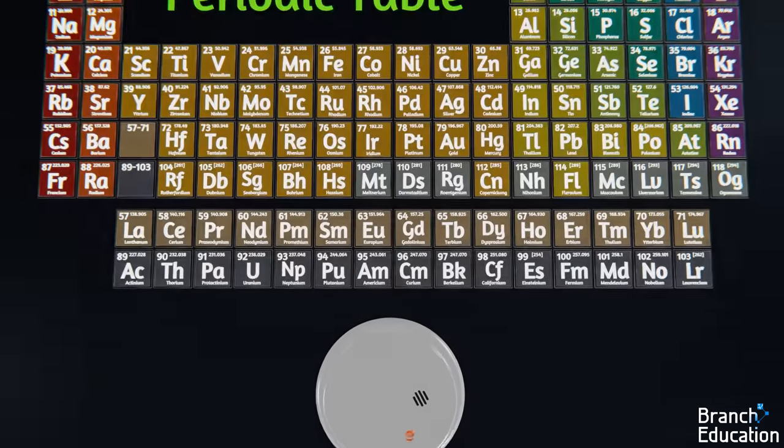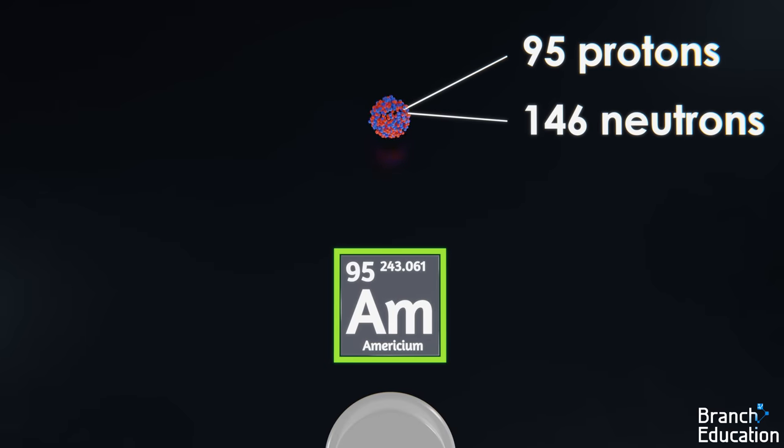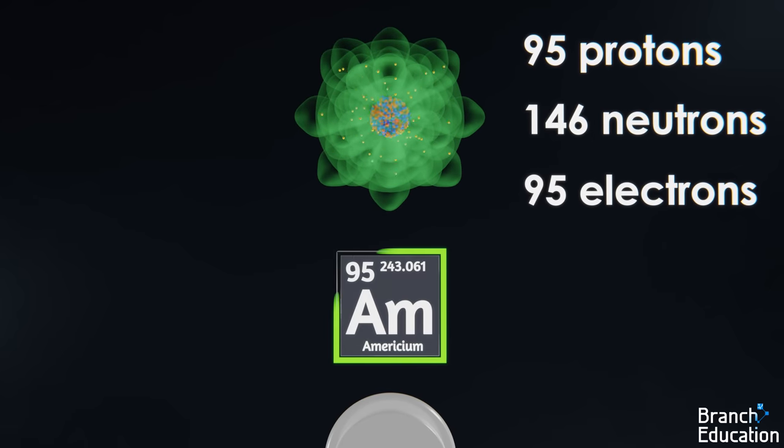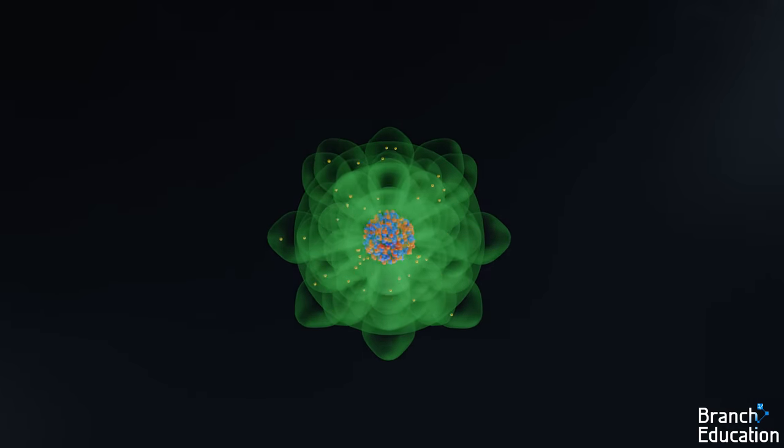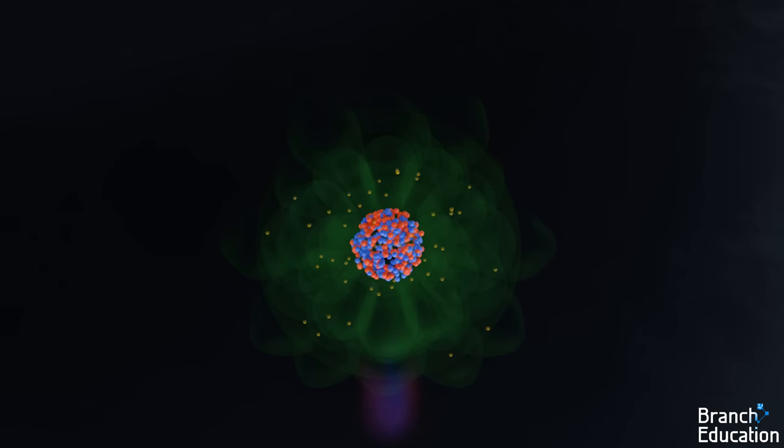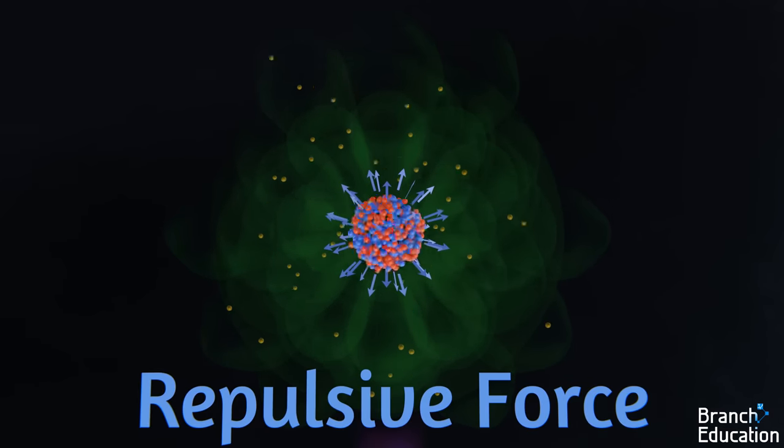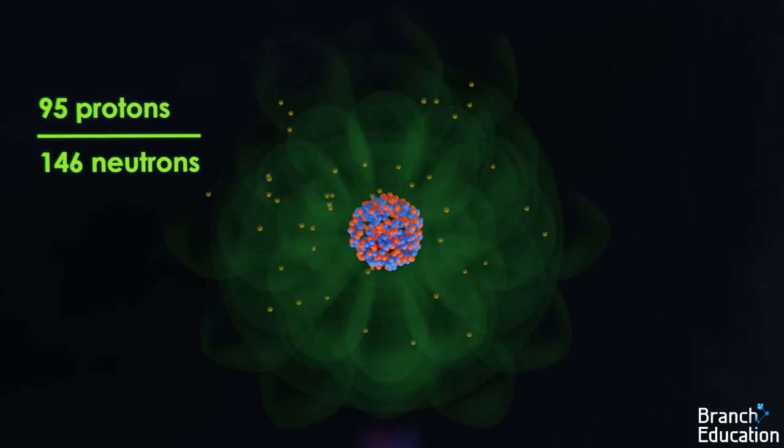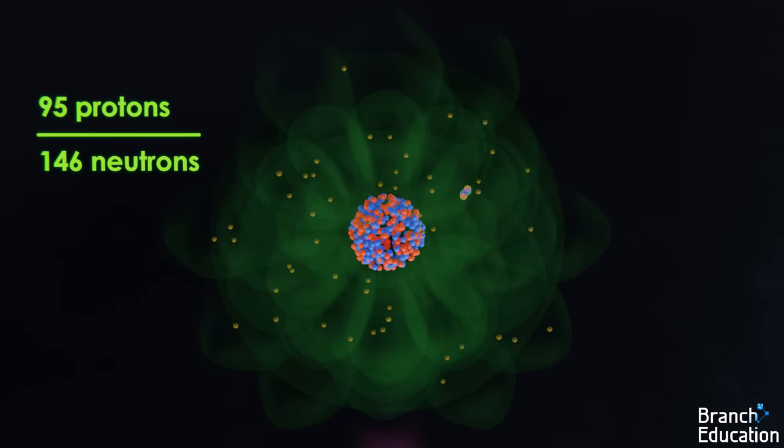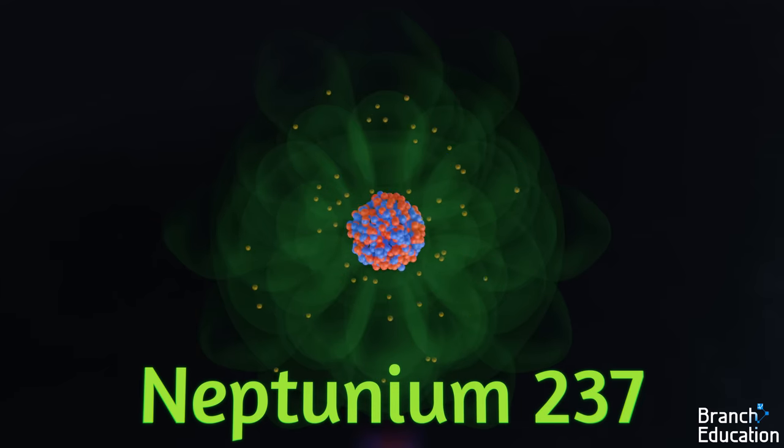Well, americium-241 is down there on the periodic table. It has 95 protons and 146 neutrons in its nucleus and 95 electrons in its shells. You're probably familiar with the idea that like charges repel each other. Well, here we have 95 positive charges and a bunch of neutrons all glued together by the strong nuclear force. However, the repulsive forces of these 95 protons and their ratio to neutrons makes the nucleus unstable. And as a result, it has a probability to repel two neutrons and two protons and thus turn into neptunium-237.